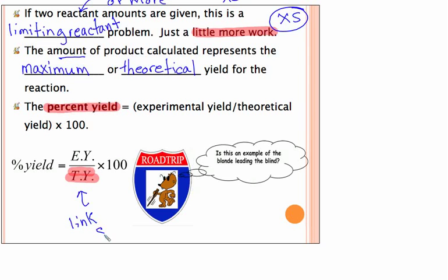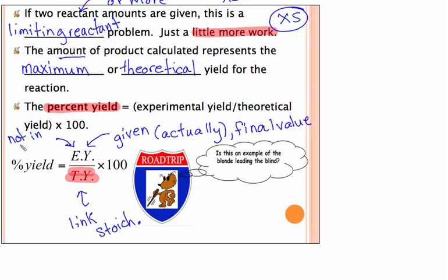The theoretical yield will always be our link to our stoichiometry in or out of a stoichiometry calculation. Your experimental yield will either be given, sometimes it's called the actual, what somebody actually was able to obtain in the lab, so actual or actually. It's given or it would be your final value that you're calculating. In other words, that number will not go into a stoichiometry.